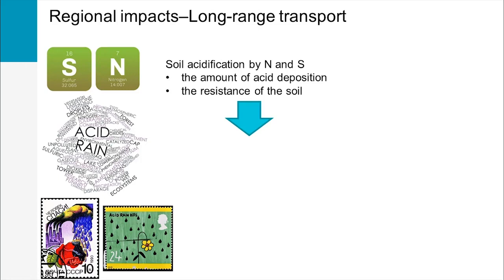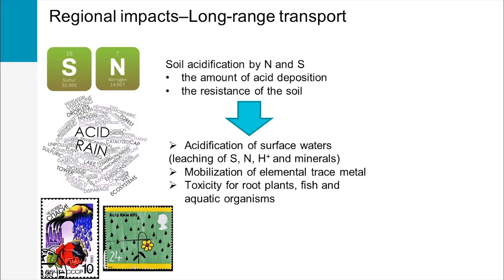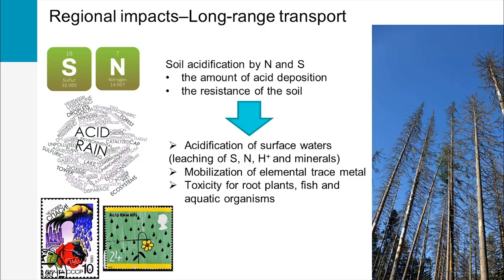Soil acidification can result in surface water acidification. In some cases, additional elements such as aluminium, naturally present in soils in a non-toxic state, can be mobilized and reach concentration levels harmful for plants and aquatic organisms. For instance, in Europe during the 1970s to the 1990s, acid rain caused a fish stock depletion in Scandinavian lakes and a widespread forest decline in parts of central Europe.